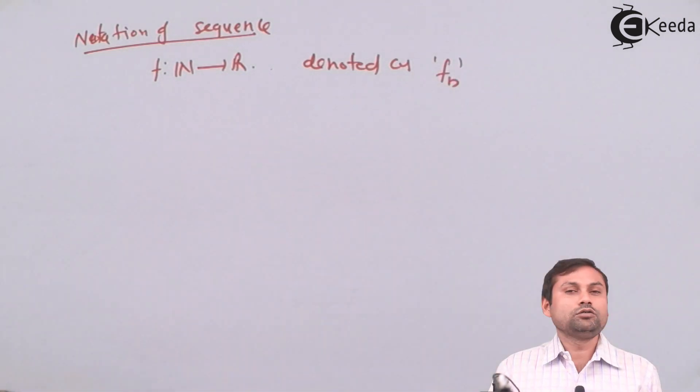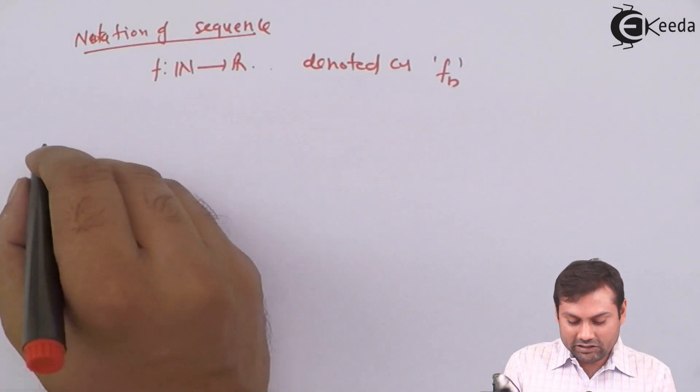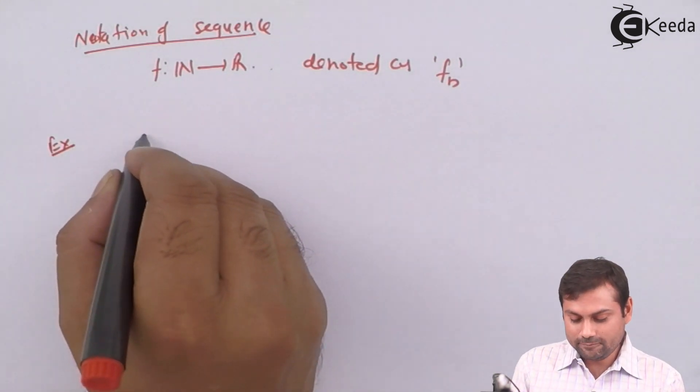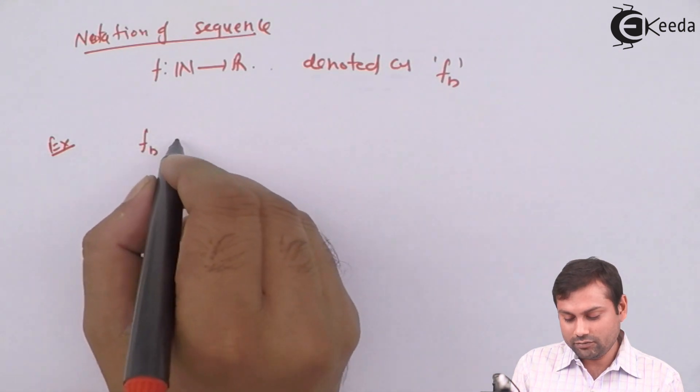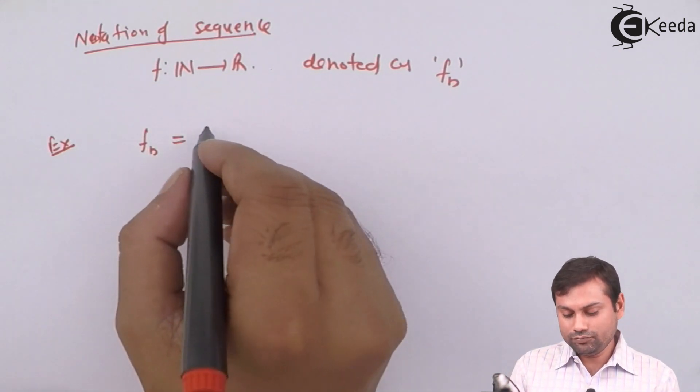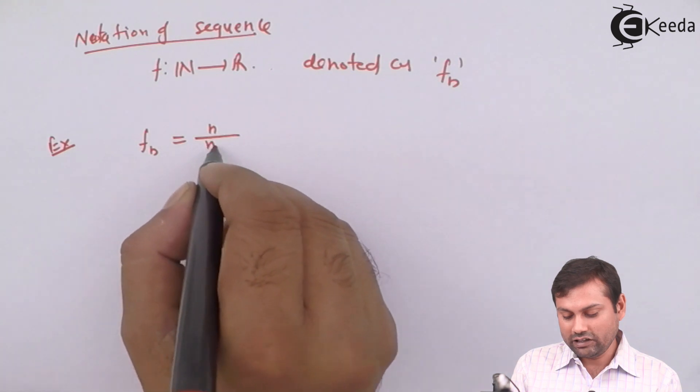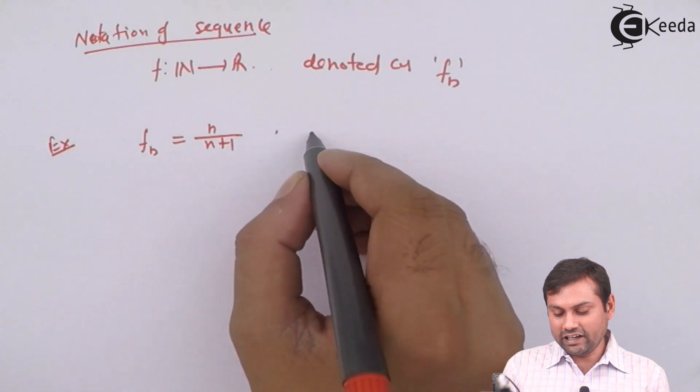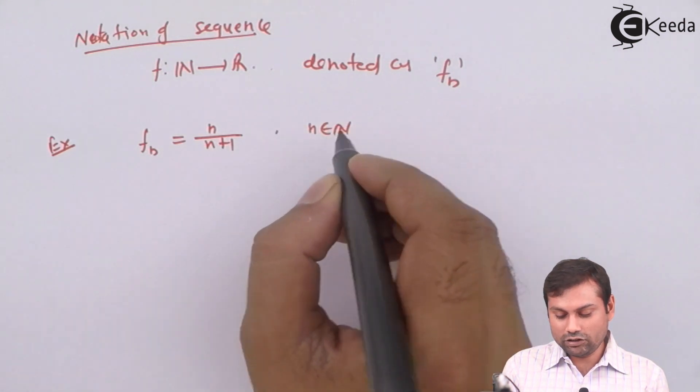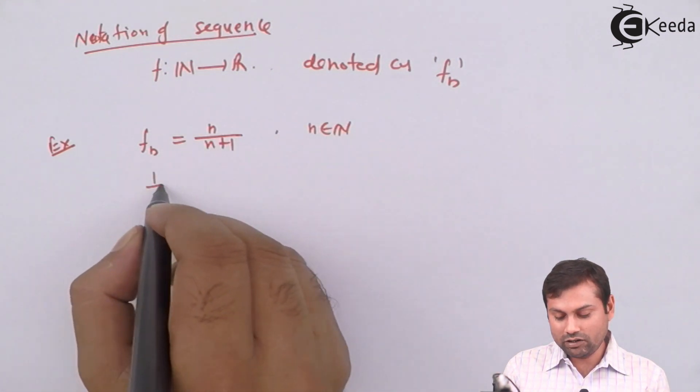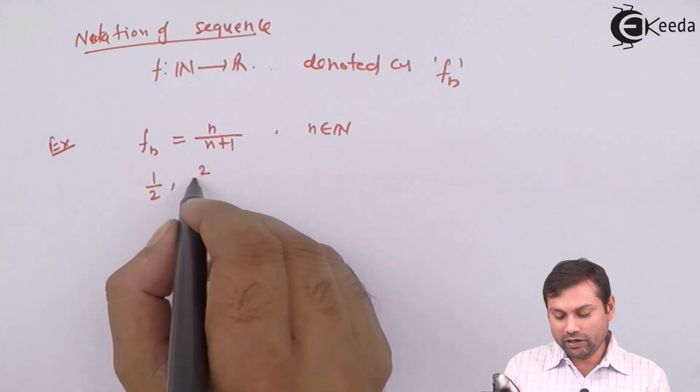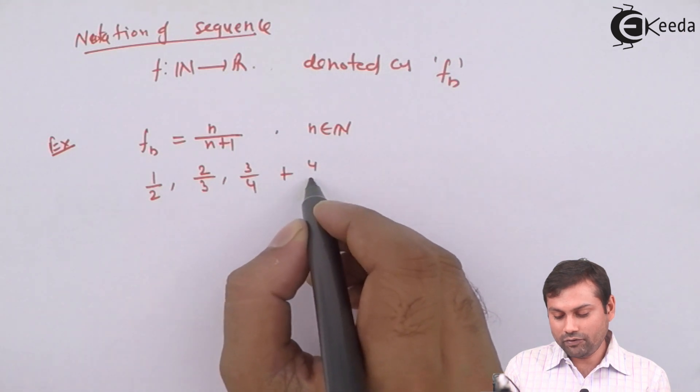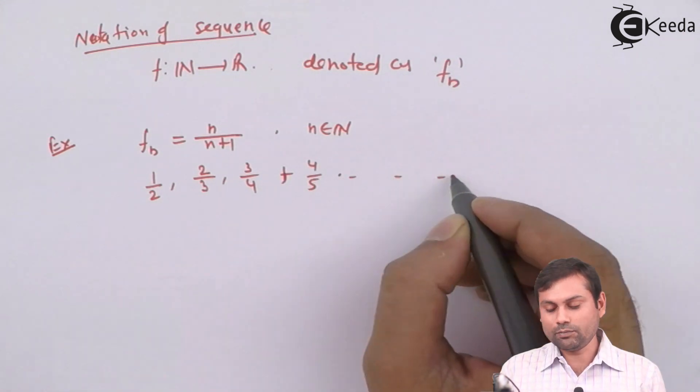This is your notation. For example, if we define fn equals to n upon n plus 1, this is also a sequence. For n, natural number inputs give first element 1 by 2, second element 2 by 3, third element 3 by 4, 4 by 5, and so on.